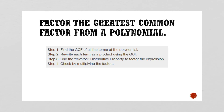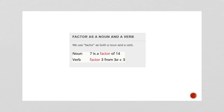That page is just a step-by-step of what we just did. If you want to have it in your notes, hit pause and write it down. Also, just so you know, we can use the word 'factor' as a noun or a verb. As a noun: '7 is a factor of 14.' As a verb: 'factor 3 from this expression.' It can be used as either one.